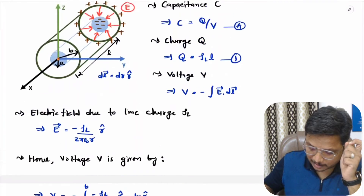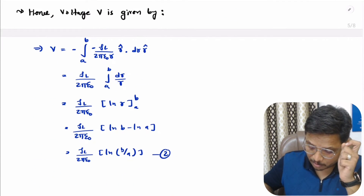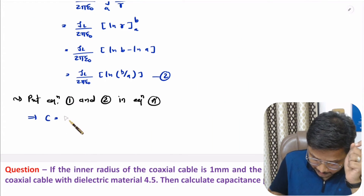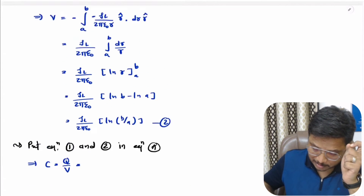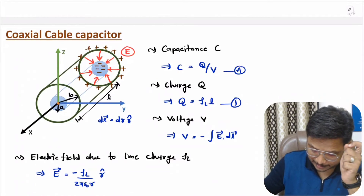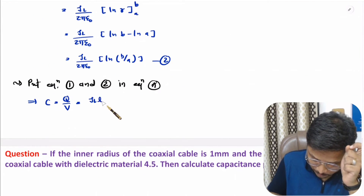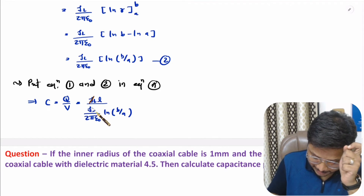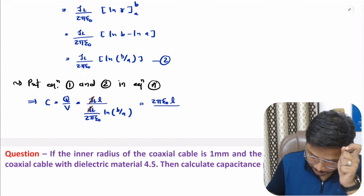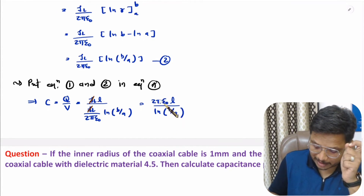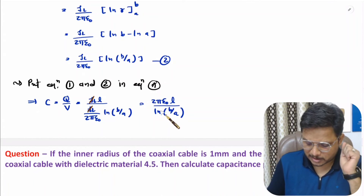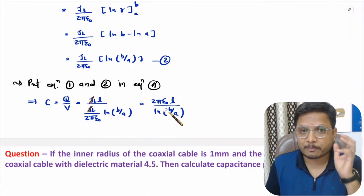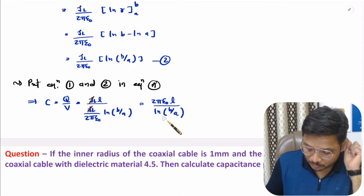We will be placing equation 1 and equation 2 into equation A. Capacitance C equals charge by voltage. Charge is rho L into L, divided by voltage which gives rho L divided by 2 pi epsilon naught into ln(B/A). Here rho L gets cancelled, and 2 pi epsilon naught goes to the numerator, giving C equals 2 pi epsilon naught L divided by ln(B/A). This is the capacitance due to coaxial cable — the standard result.